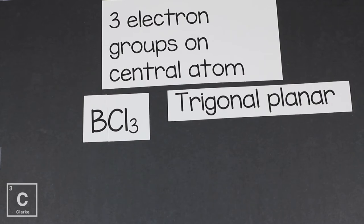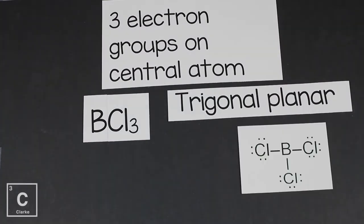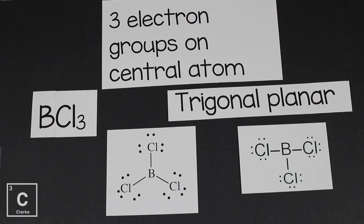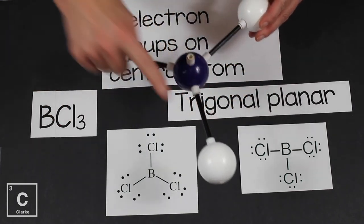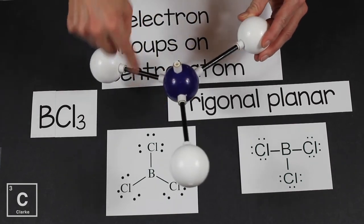A good example is boron trichloride. Boron is one of those elements that has a full octet with six electrons, so it only makes three bonds — one central atom and three bonded atoms. If we were to draw the Lewis dot structure, those bonds hate each other and want to be as far away as possible. This is trigonal planar, where the bonds are equal angles from each other at 120 degrees.